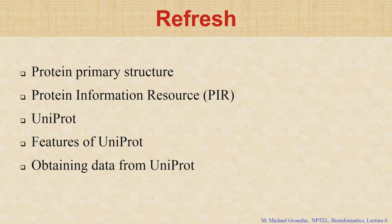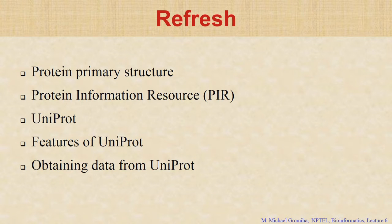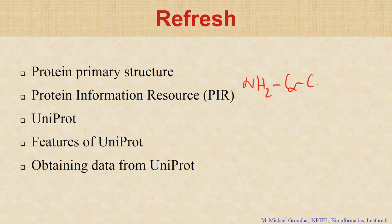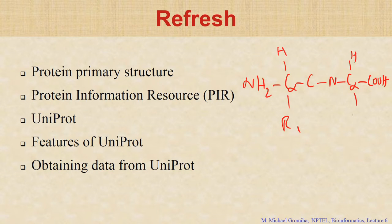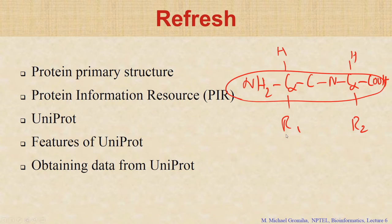Let us refresh ourselves regarding the contents discussed in the previous class. Protein primary structure is the linear sequence of the protein. The main chain is the same — NH2, C-alpha, C, N, C-alpha, CO — and the side chain R group is different. There are 20 different types of amino acid residues, and you can form any chain based on R1 and R2.